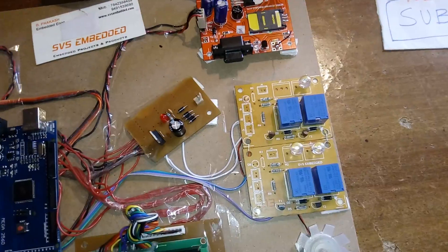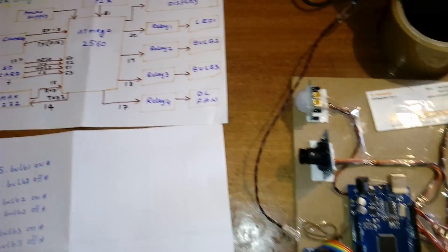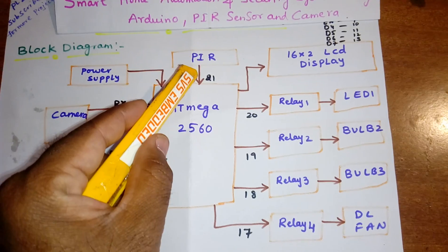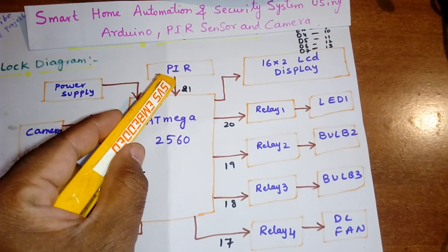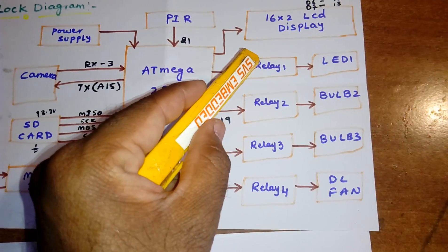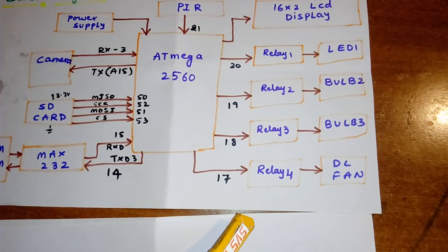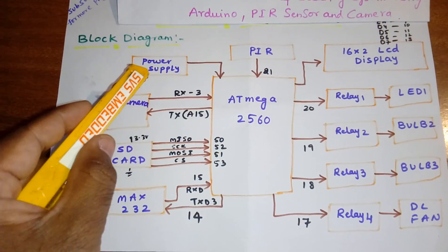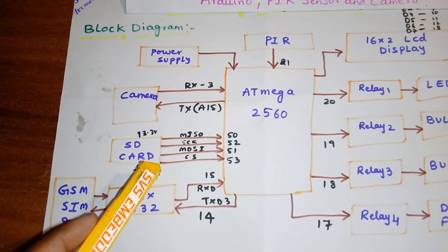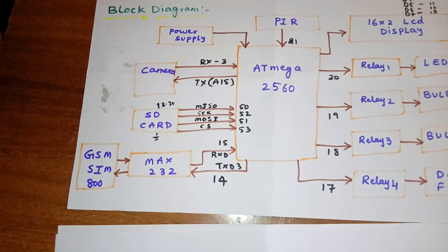I am using a power supply section for relay coils and one DC fan. The system includes: Arduino Mega 2560, PIR proximity infrared sensor for human body motion detection, 16x2 LCD display, five relays controlling four bulbs and one DC fan, one camera with RX/TX, and one SD card with MOSI, MISO, SCK connections, plus the SIM800 GSM modem.